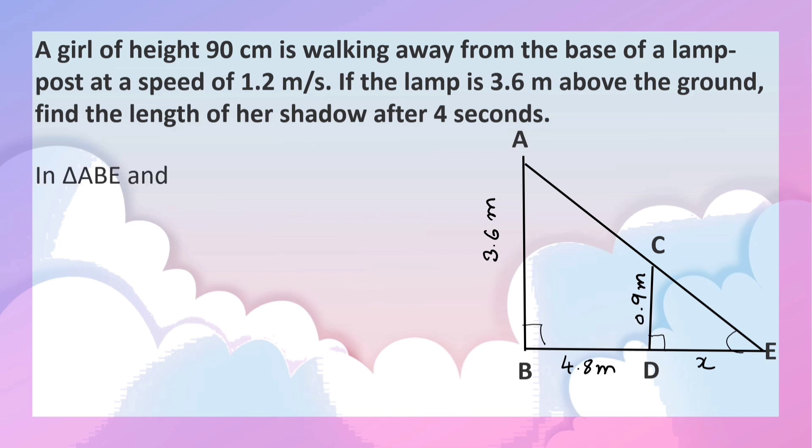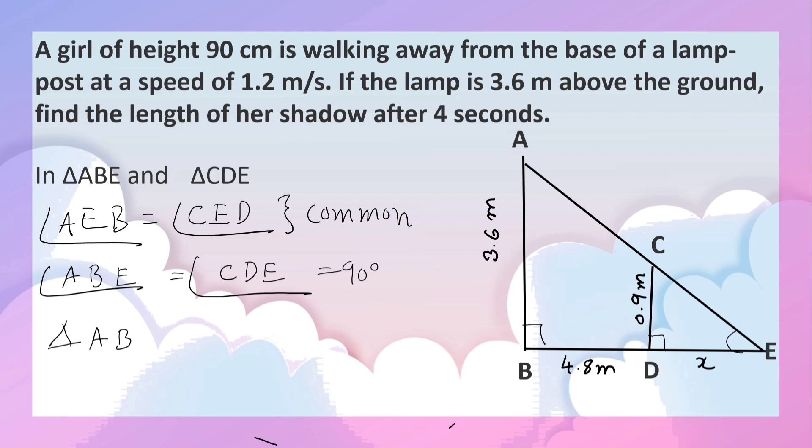In triangle ABE and triangle CDE, angle AEB is equal to angle CED, and angle ABE is equal to angle CDE. Angle ABE equals 90 degrees. So triangle ABE is similar to triangle CDE.